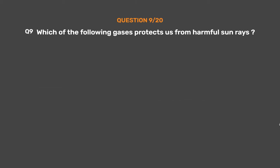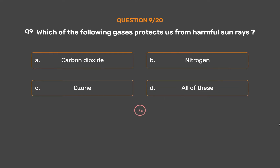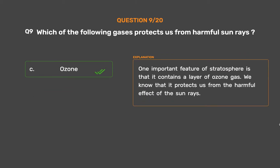Question number 9: Which of the following gases protects us from harmful sun rays? Option A: Carbon dioxide. Option B: Nitrogen. Option C: Ozone. Option D: All of these. The correct answer is Option C, Ozone. One important feature of the stratosphere is that it contains a layer of ozone gas. It protects us from the harmful effect of the sun's rays.